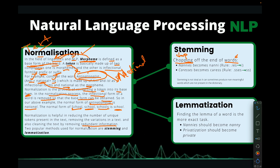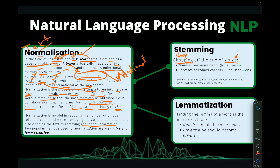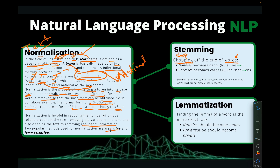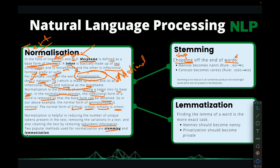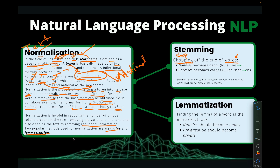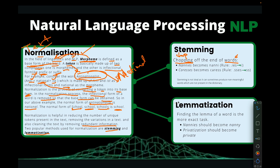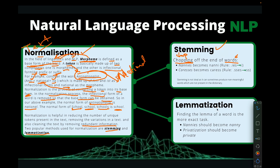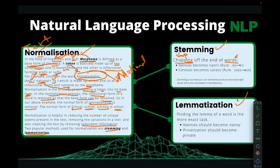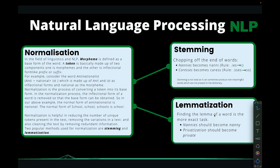We have two main ways of doing normalization: we have what is called stemming, and then we have what is called lemmatization. These two are the main techniques used in performing normalization. We have stemming and then we have lemmatization.